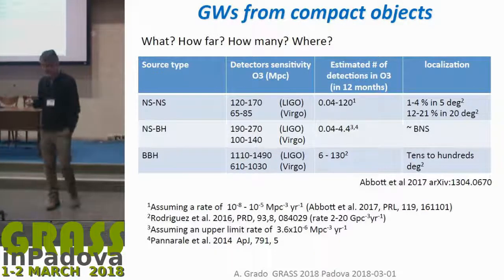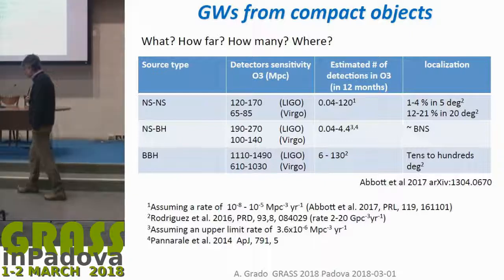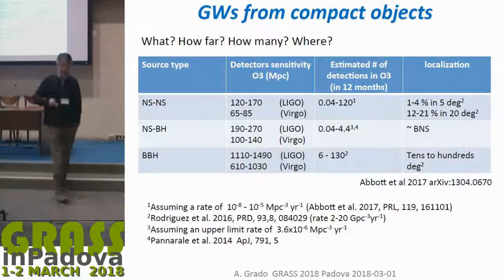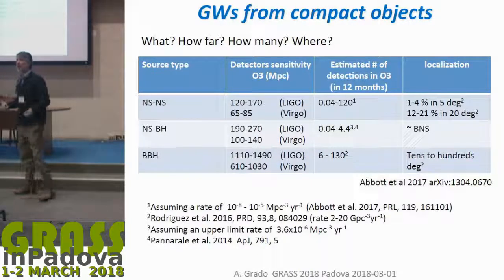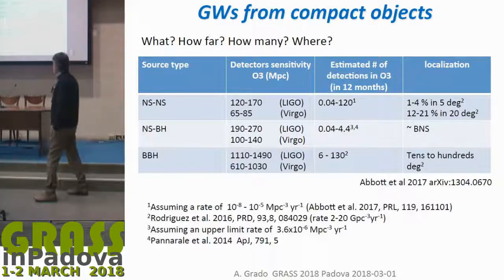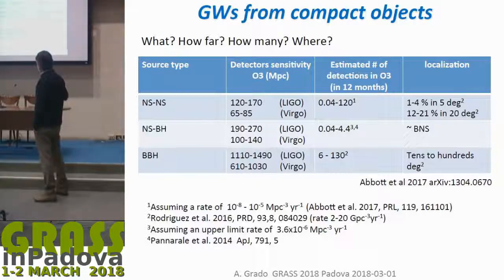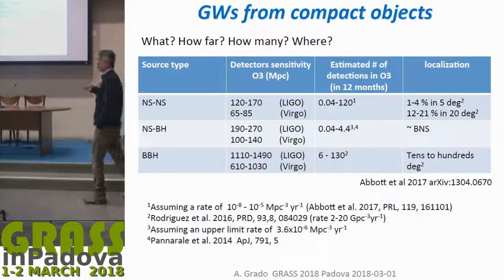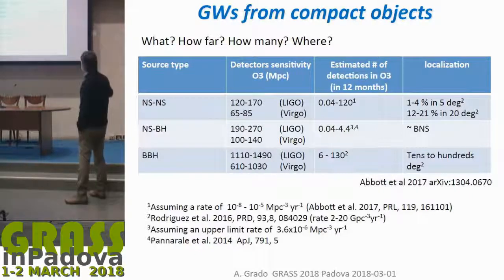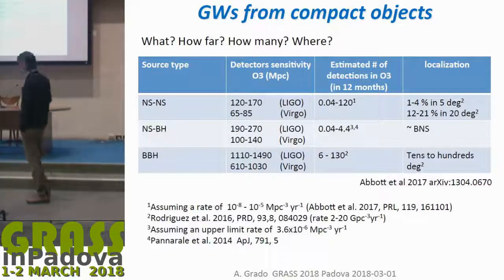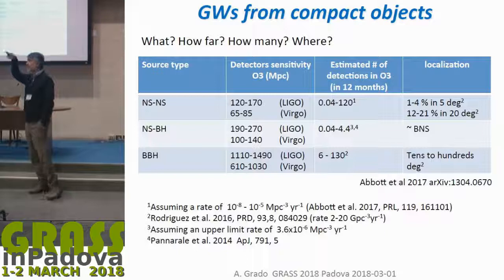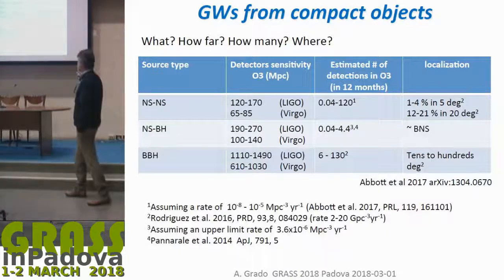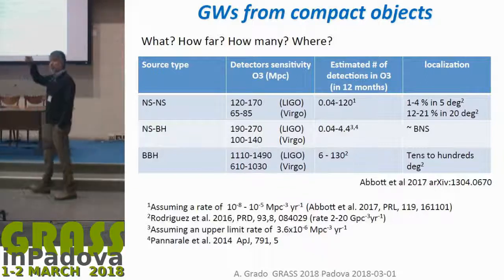Even in binary black hole systems, an electromagnetic signature is expected if the circumbinary disk survives until the merging of the two objects. Important parameters are the distances of detector sensitivity — which tells us how far we can see our sources — and the error area that three detectors are capable of localizing the source to.